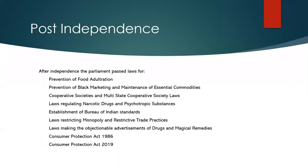Post-independence, India had laws for prevention of food adulteration, prevention of black marketing, and the Maintenance of Essential Commodities Act — which is being frequently referenced even now during the COVID-19 lockdown for flow of essential commodities. Cooperative societies laws, laws regulating narcotic drugs and psychotropic substances were formed. The Bureau of Indian Standards was established to decide standards for products sold in Indian markets — we have the ISI mark. We also now have the Bureau of Energy Efficiency Standards, which gives star ratings on products.